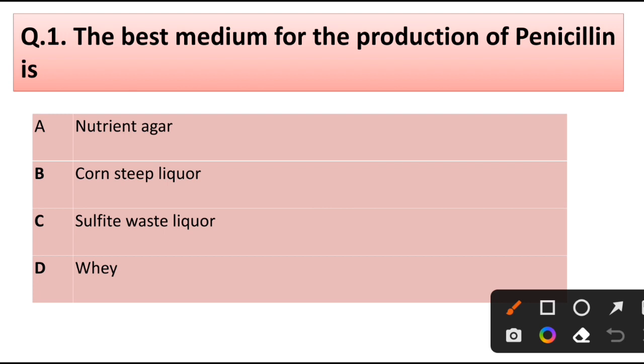Question number 1. The best medium for production of penicillin is: nutrient agar, corn steep liquor, sulfite waste liquor, or whey. Correct answer is option B, corn steep liquor.